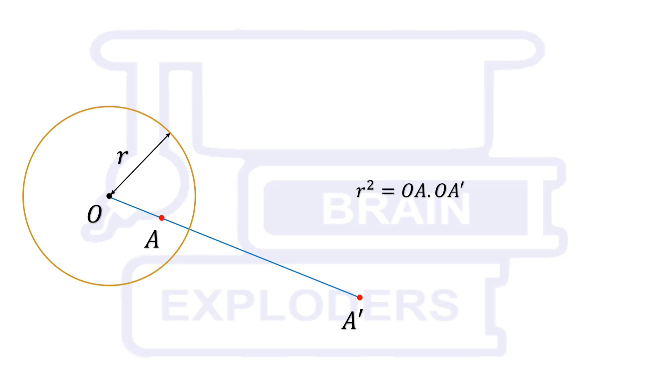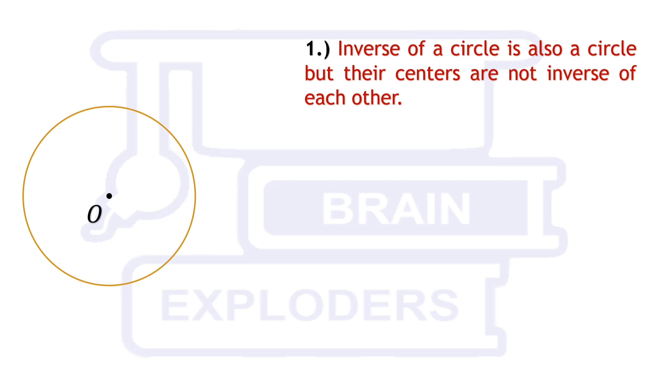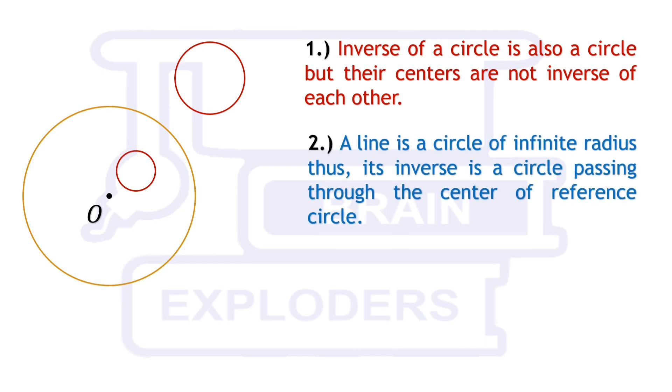If we find the inverse of all the points of a curve, we obtain another curve which is called the inverse of the previous curve. Inverse of most of the curves have different shapes but inverse of a circle is another circle. Since line can also be considered as a circle of infinite radius, therefore its inverse is also a circle which passes through the center of reference circle.